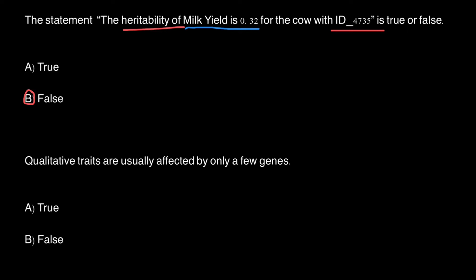The next statement: qualitative traits are usually affected by only a few genes. Is it true or false? Please pay attention to the word qualitative. Traits can be either qualitative or quantitative. Qualitative traits are usually controlled by only a few genes or alleles.